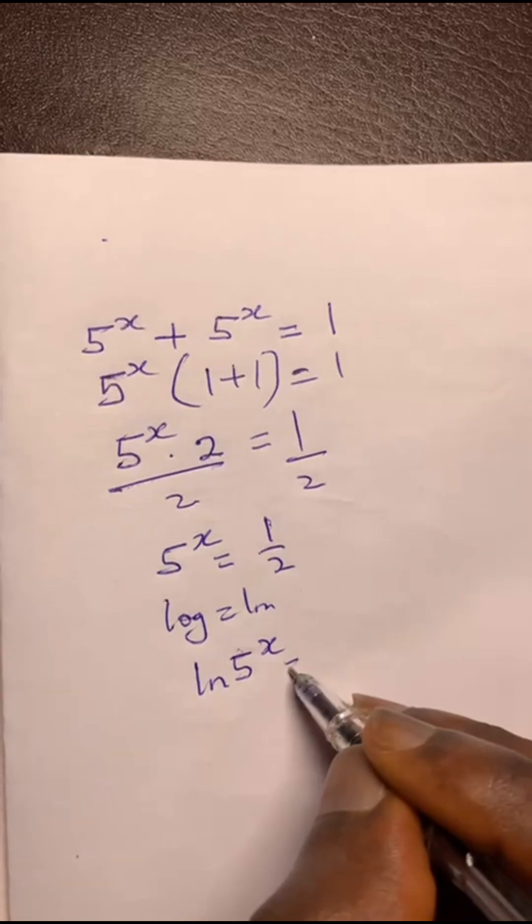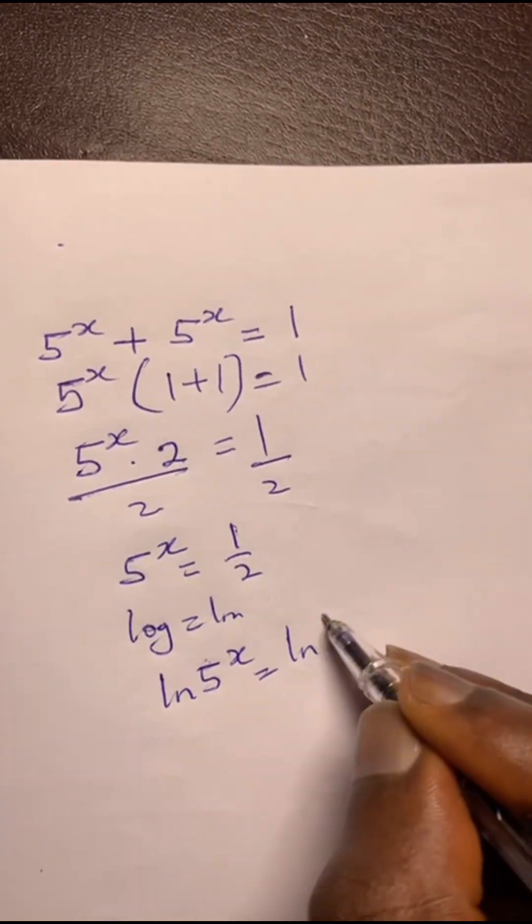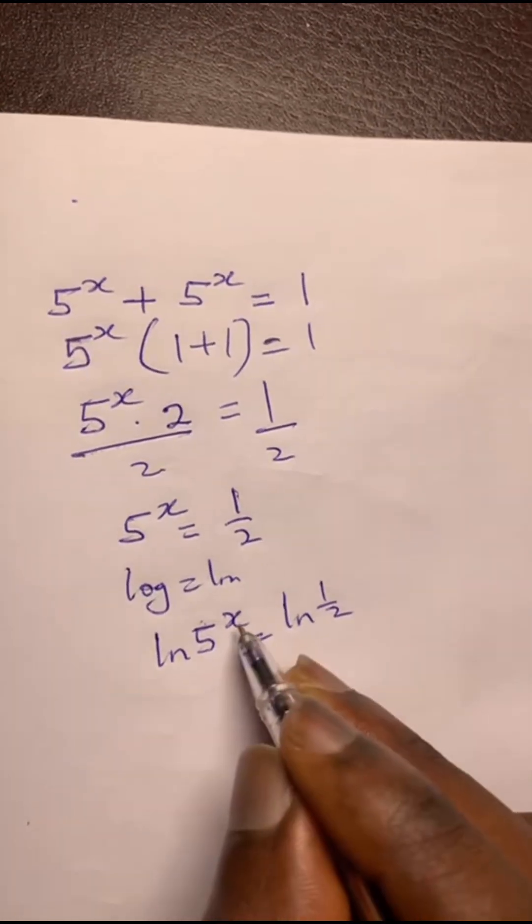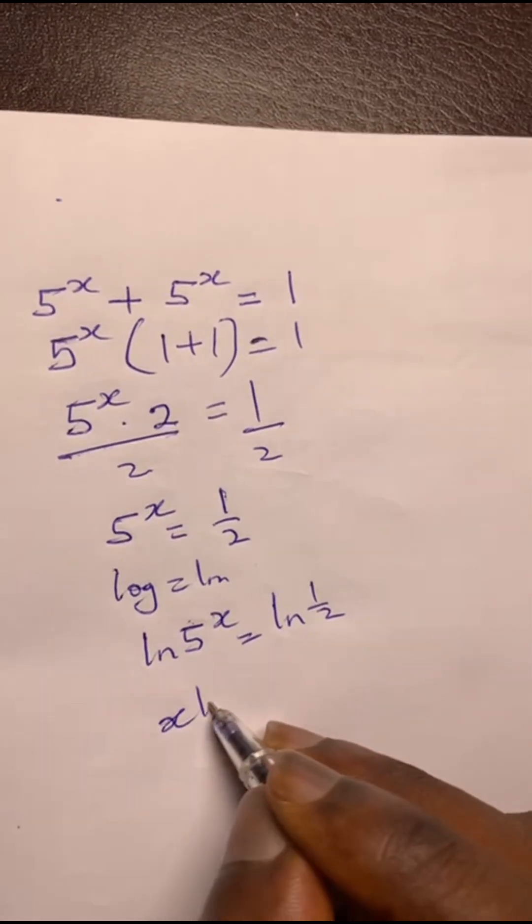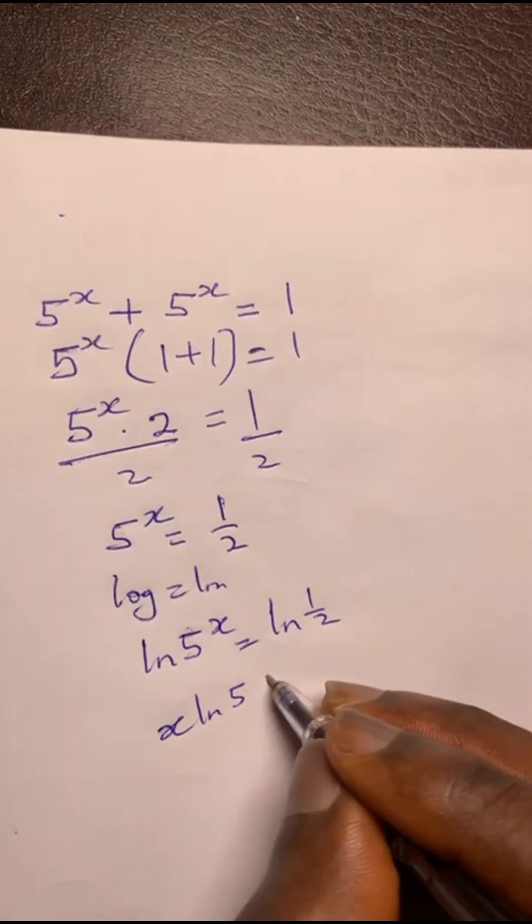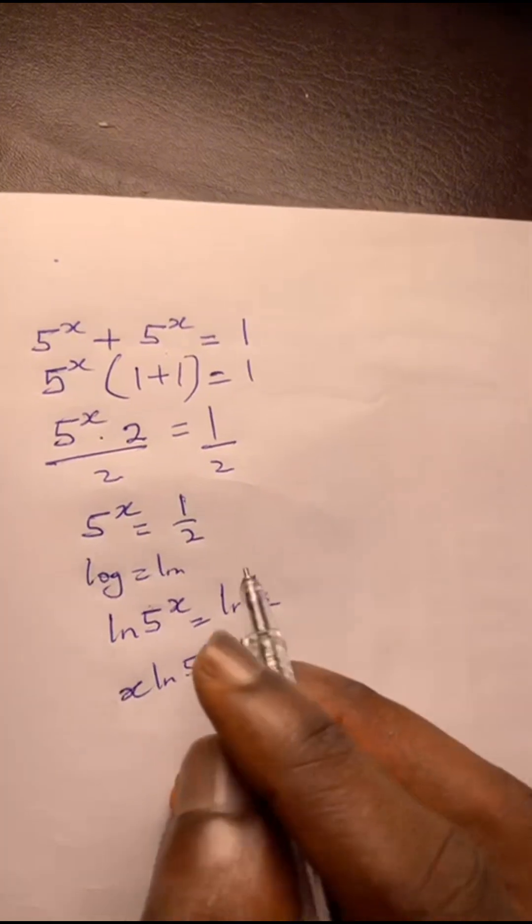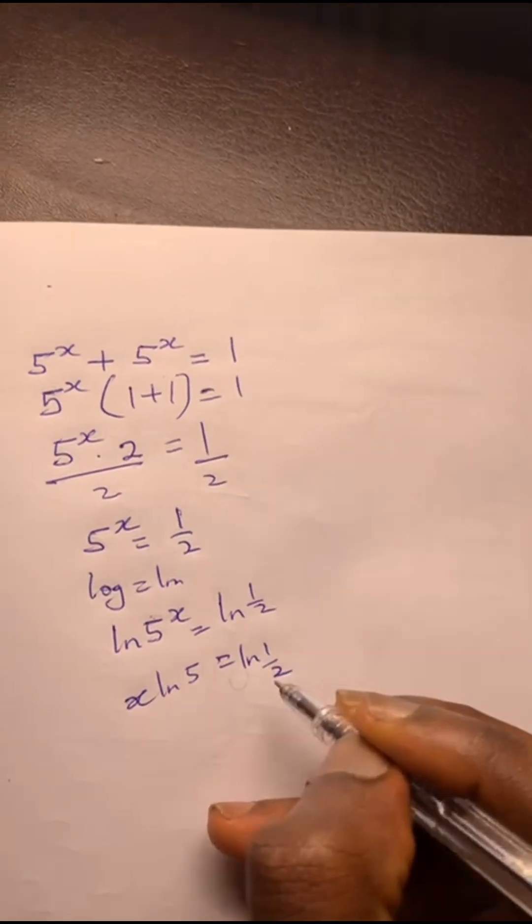So 5 to the power of x equals, you do it to both sides because it's an equation. So this comes over here, this is x ln 5 equals ln. So this is 2.